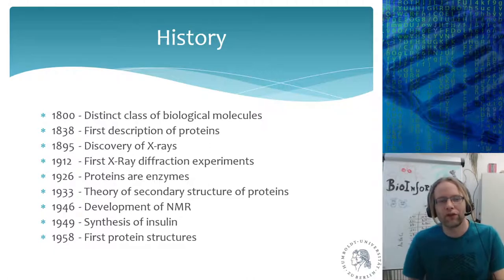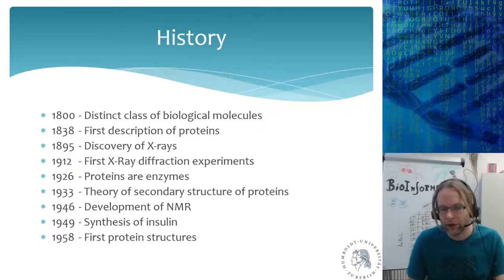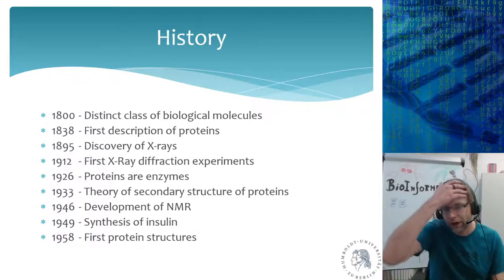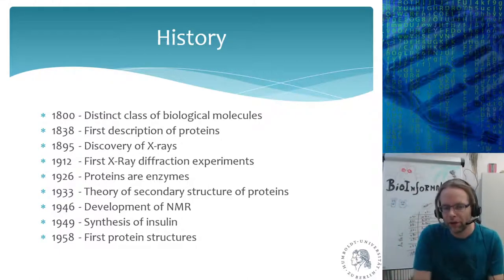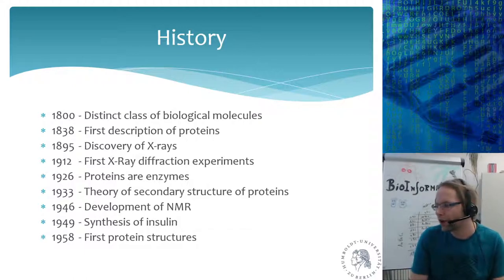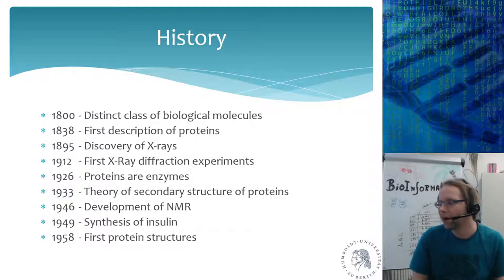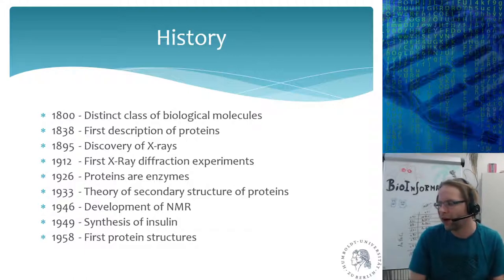In 1933, they figured out the theory of the secondary structure of proteins. Before, people had no real idea how proteins would look. They did X-ray diffraction experiments, but the theory of secondary structure is when people started realizing that hydrogen bonds and sulfur bonds are the main ways that a protein chain attaches to itself, giving it a certain secondary structure.